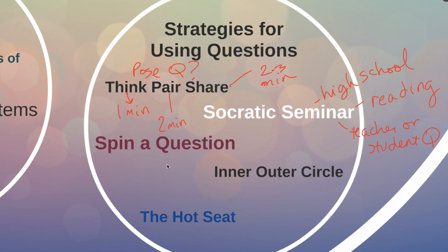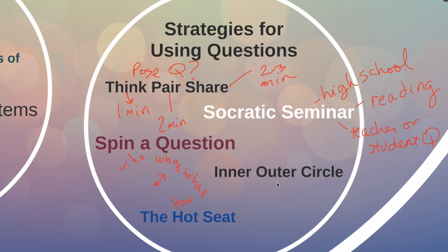Another simple one is called spin a question — you can find a template online. You make a little spinner with different question starters: who, what, when, where, why, how. You spin it and when it lands on a starter, the kids come up with a question that has to start with that word — why, what, how, what do you think — and so on. It randomizes the questioning when you're having them debrief something.